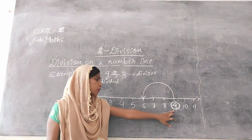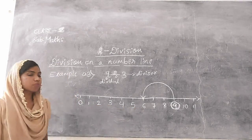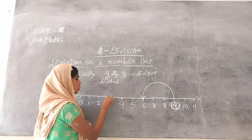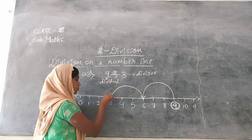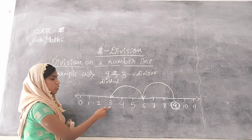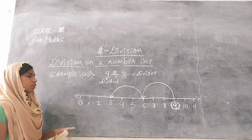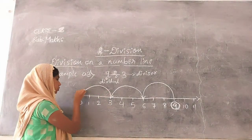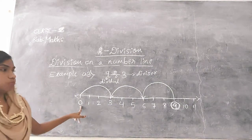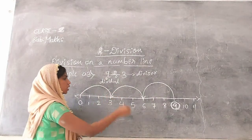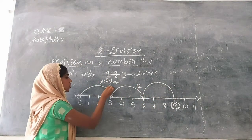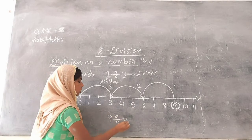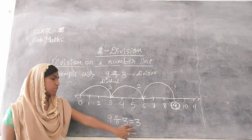From 6, again jump but taking 3 steps: step 1, step 2, step 3 — jump again. I reach number 3. From 3, jump again by taking 3 steps: step 1, step 2, step 3 — jump. Finally, I reach number 0. So I jumped 1 time, 2 times, 3 times. Therefore, 9 divided by 3 is equal to 3.